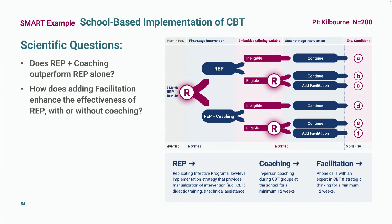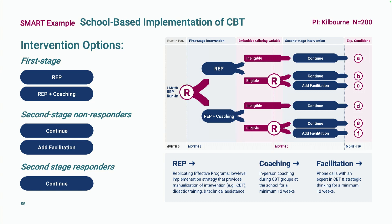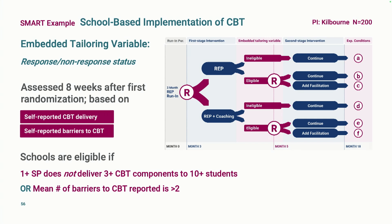Again, the randomizations map directly to the research questions. The first question — how do we begin, REP or REP plus coaching — maps to the first randomization. The second question — for those who might need facilitation, do we add it? — maps to the second randomization. First-stage options are REP or REP plus coaching, with in-person coaching during CBT groups at the school for a minimum of 12 weeks. Facilitation consists of phone calls with an expert who addresses both skill questions and organizational barriers.